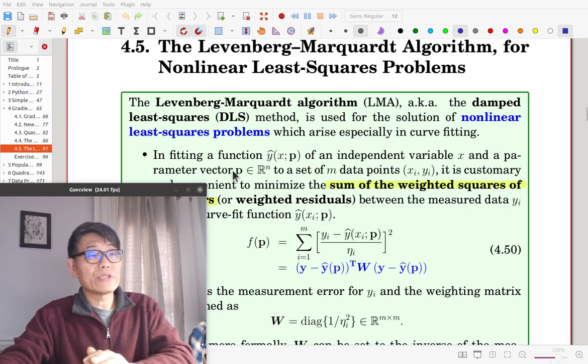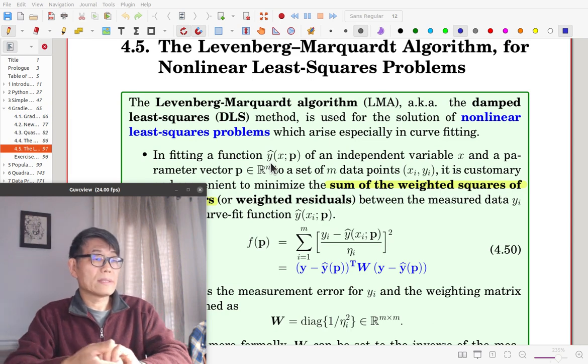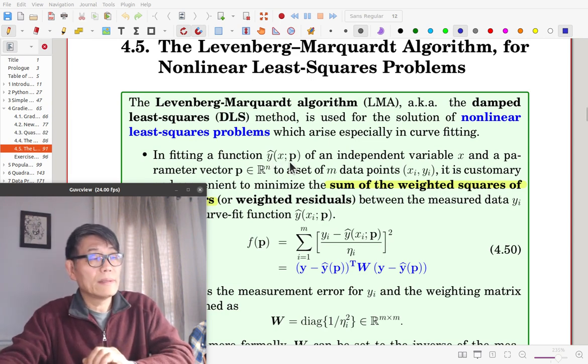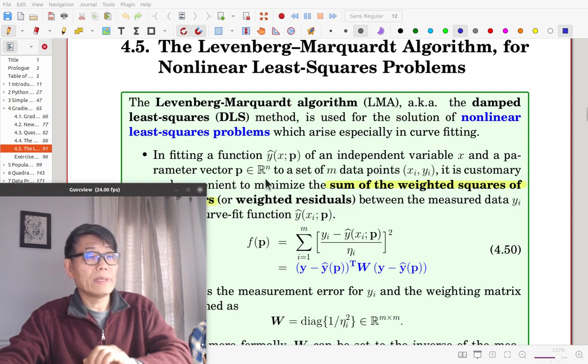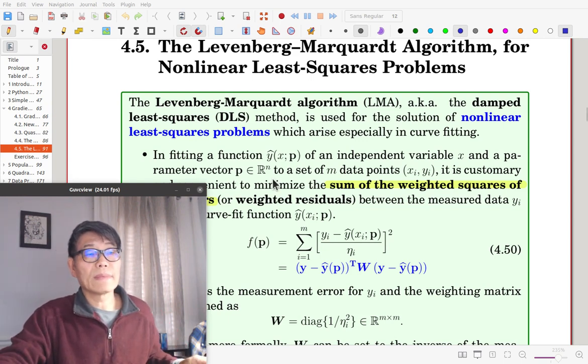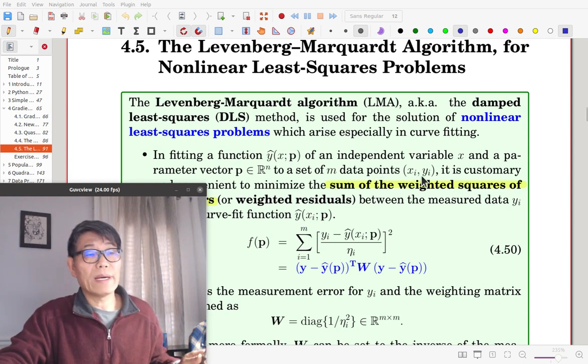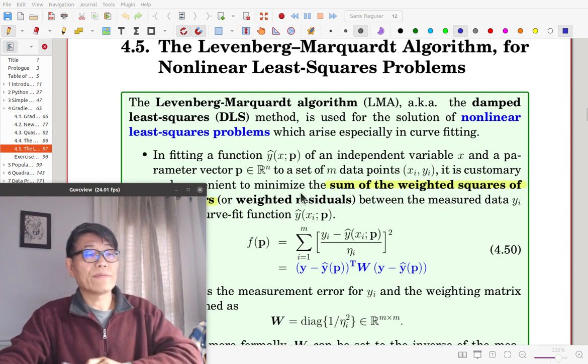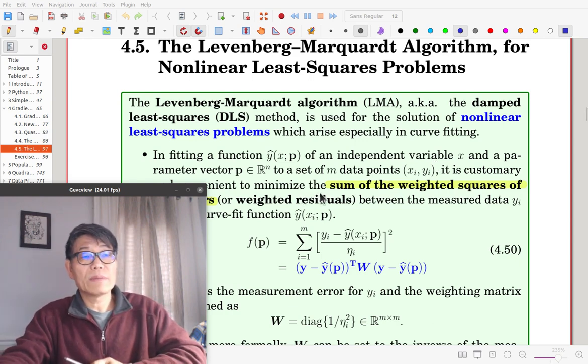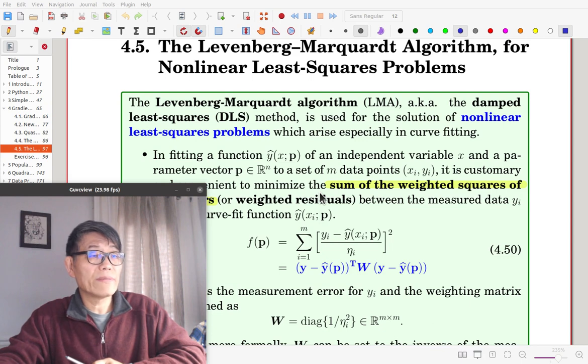The fitting function y hat is a function of data and a parameter. The parameter vector p is in R^n. Given m data points (x_i, y_i), the objective function is formulated as the sum of the weighted squares of errors as in this equation.